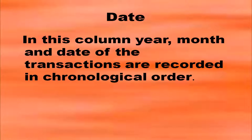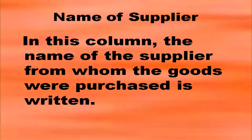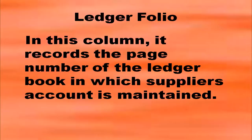In the date column, year, month and date of the transactions are recorded in chronological order, that is in the order of occurrence. Then coming to invoice number — in the second column of the purchases book you have to write the invoice number. Third column is name of the supplier, from whom the goods were purchased.